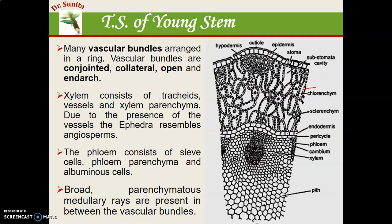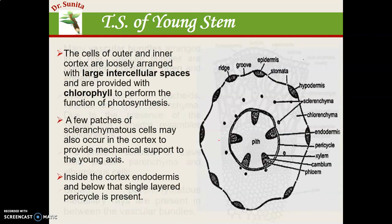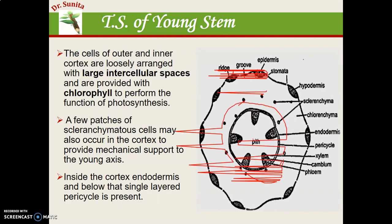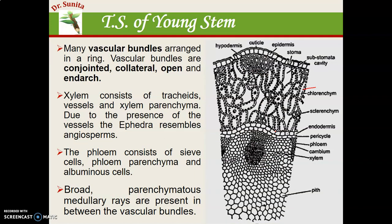The vascular bundles are many and are arranged in ring form in the center. There is a large central pith present in the vascular bundle region, surrounded by endodermis and pericycle. The vascular bundles are conjoint — the xylem and phloem are in the same radius. This is the phloem, and the xylem and phloem are present in one radius, so they are known as conjoint vascular bundles.